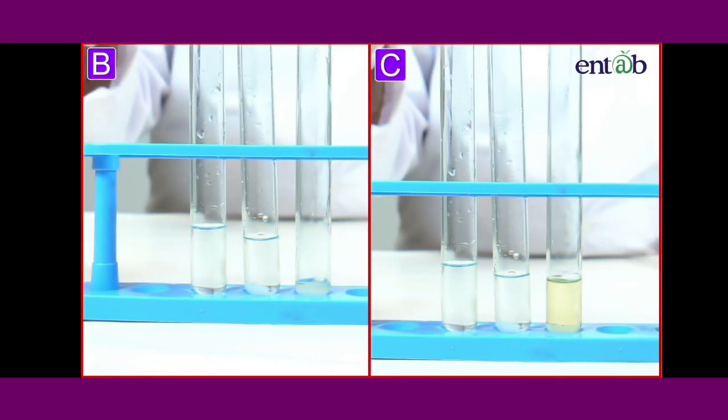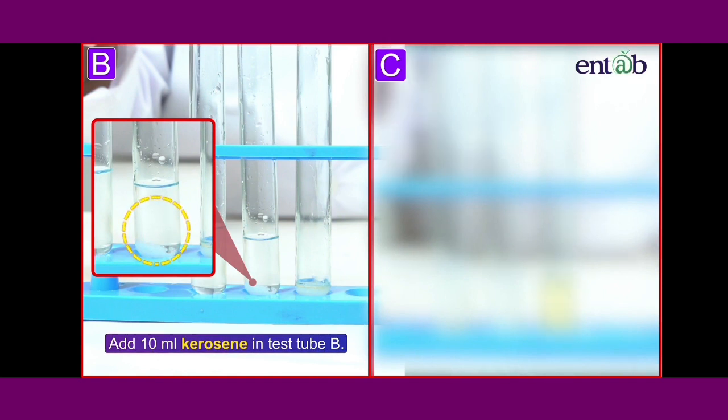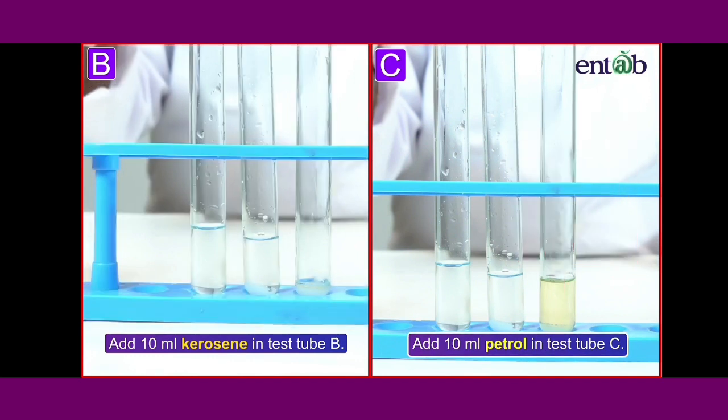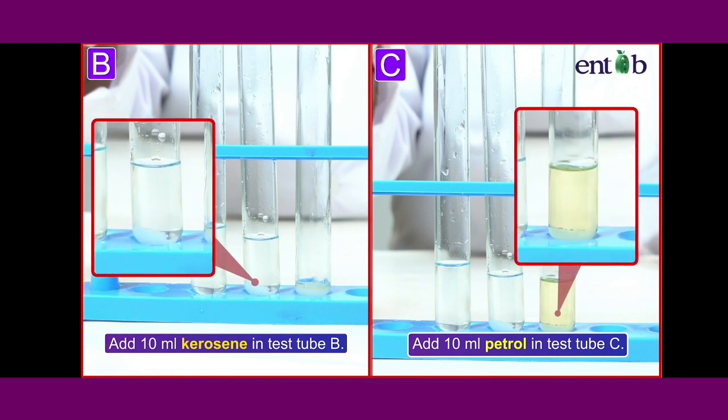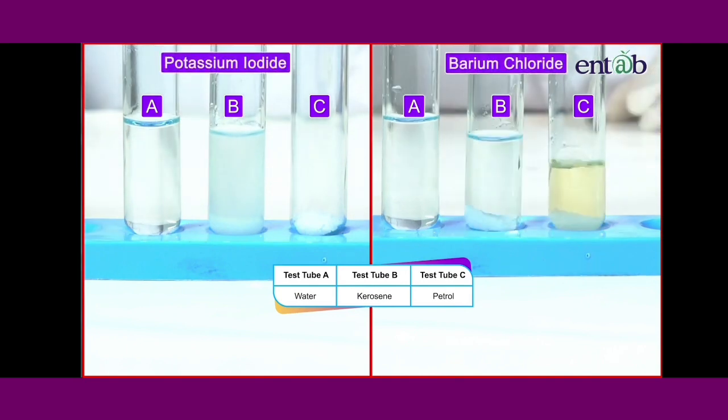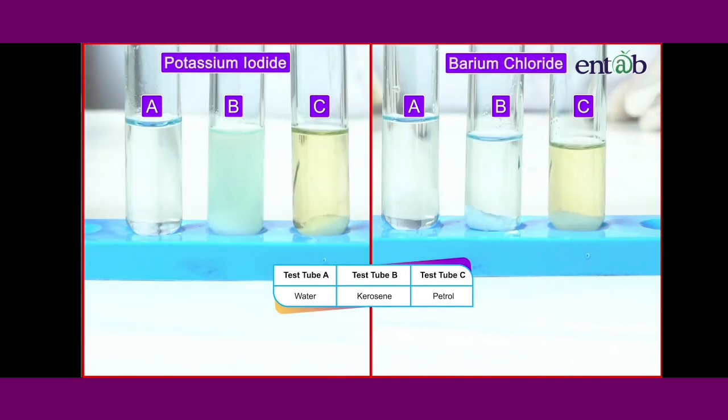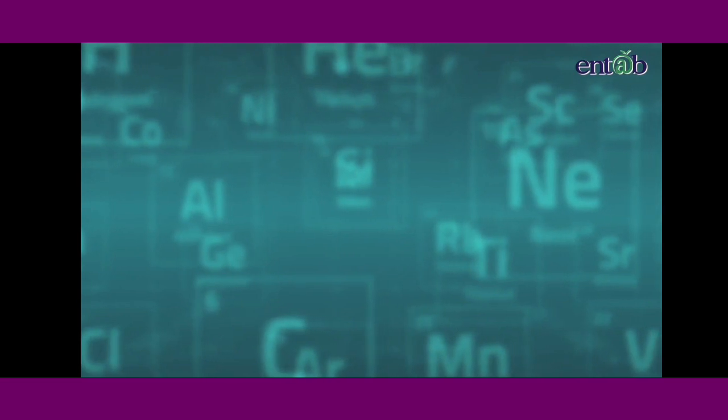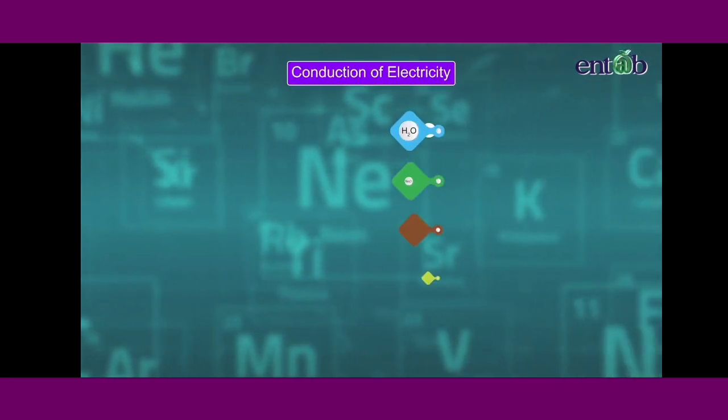Let us repeat this process by adding kerosene to test tube B and petrol to test tube C. Here we note that the salt does not dissolve in either petrol or kerosene. Repeat the same activity with potassium iodide and barium chloride. The observation only reconfirms the fact that ionic compounds are soluble in water but insoluble in organic solvents, namely petrol and kerosene.